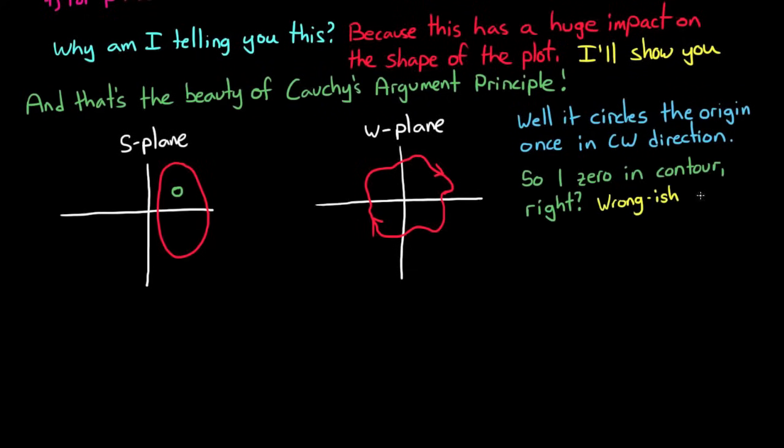Well, sort of wrong. Remember, all this tells us is that there is one more zero than poles inside the contour. So if there are no poles, then there is one zero. But what if there's three poles, then there must be four zeros.